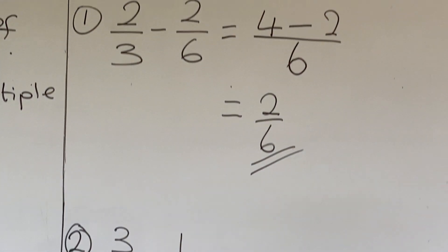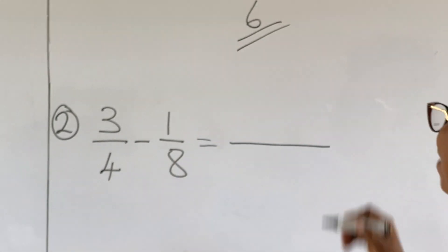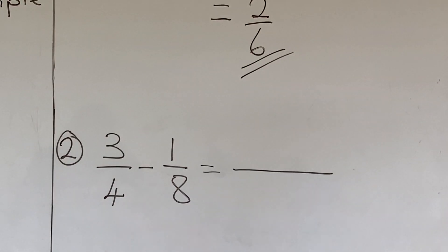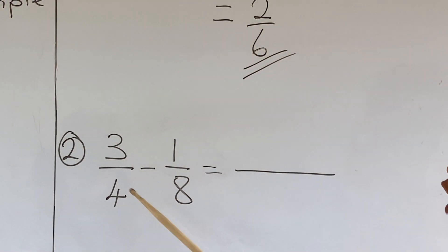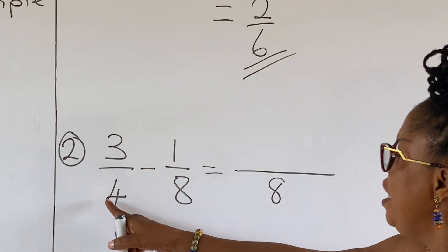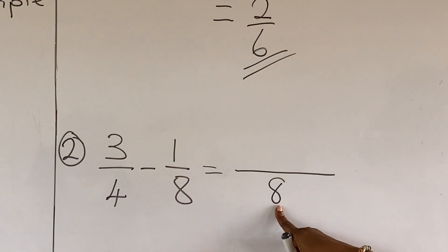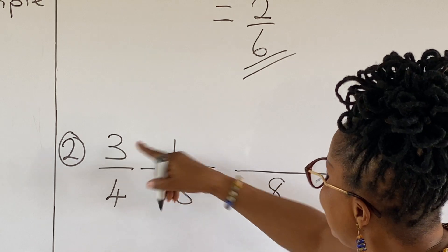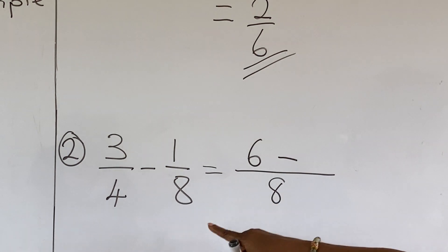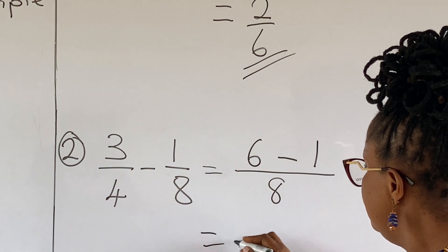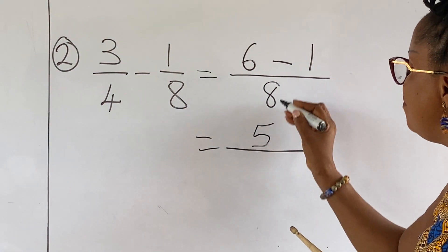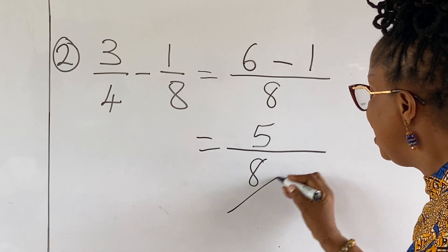Let's look at example two: three over four minus one over eight. Eight is a multiple of four, so we will use eight as our denominator. How many times will four go into eight? Two times. Two times three is six. Minus — eight will go into eight one time. One times one is one. We can now do our subtraction: six minus one is five over eight. And this is our answer.